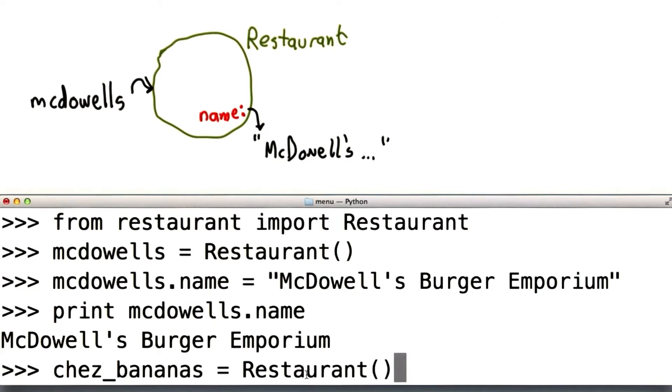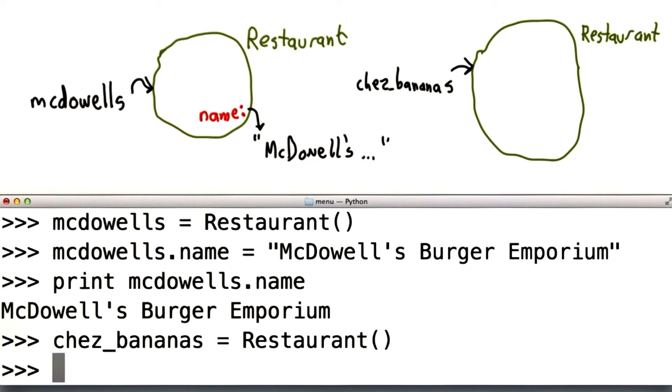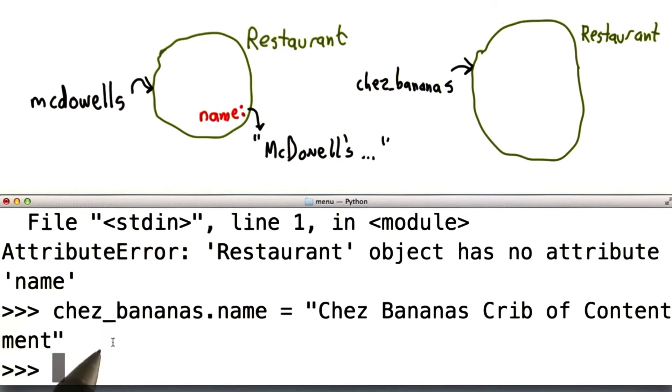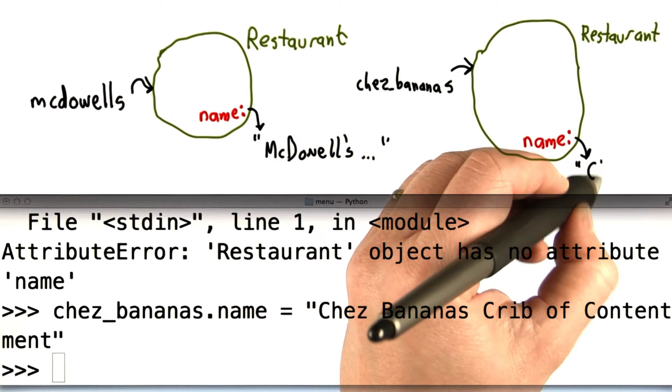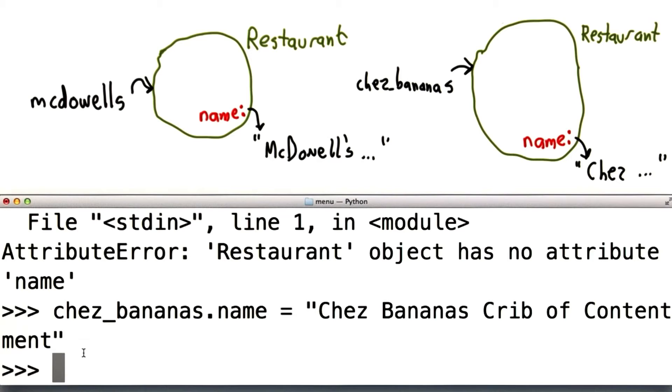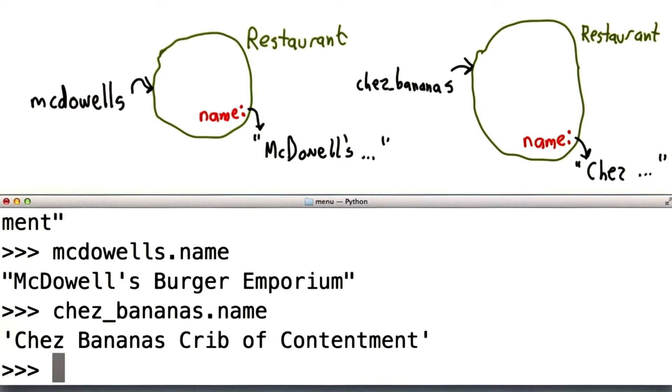Notice that if we create a new restaurant instance, this is creating a new object, and we're assigning it to the name Chez Bananas. So the Chez Bananas object does not have a name attribute. If we try to look for it, we'll get an error. We get an attribute error that says this restaurant object has no attribute named name. We can add one. Now we've added a name attribute to Chez Bananas, and it's this long string. That didn't change the name of McDowell's.